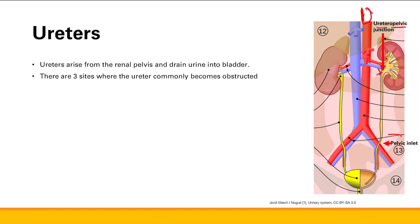Number two is the pelvic inlet — where the ureter crosses the external iliac artery. This location is prone to obstruction because the external iliac is already pressing on the ureter. Number three is the uretero-vesicle junction. Pay attention to the names: 'vesicle' refers to the bladder, so this is the junction where the ureter meets the bladder, and this can also become obstructed.